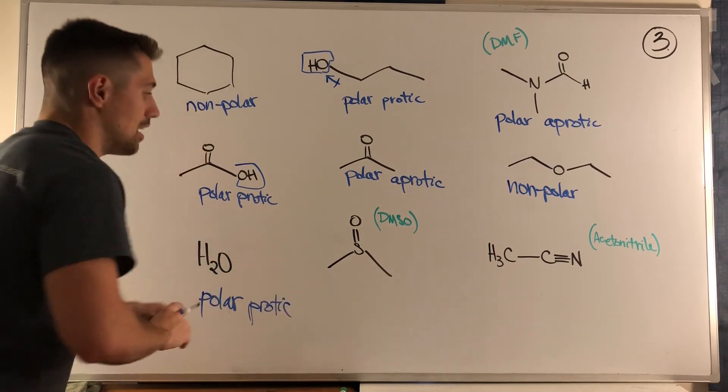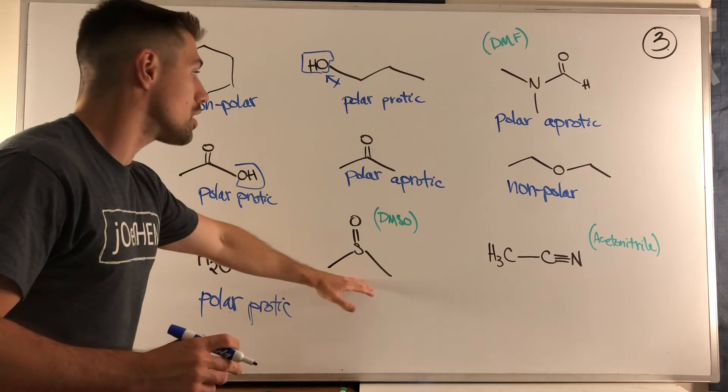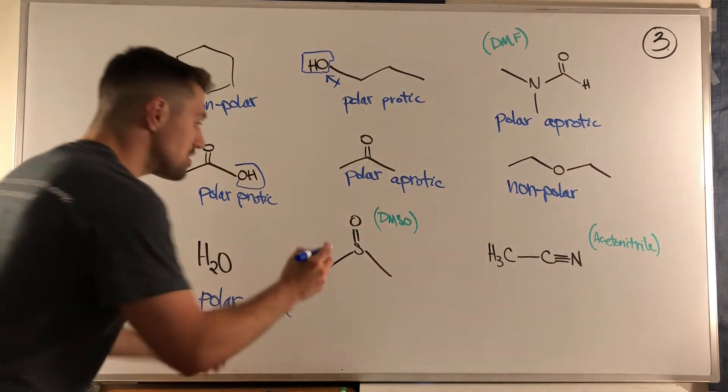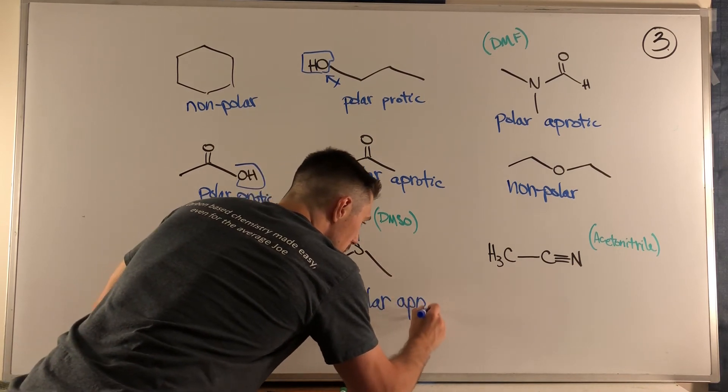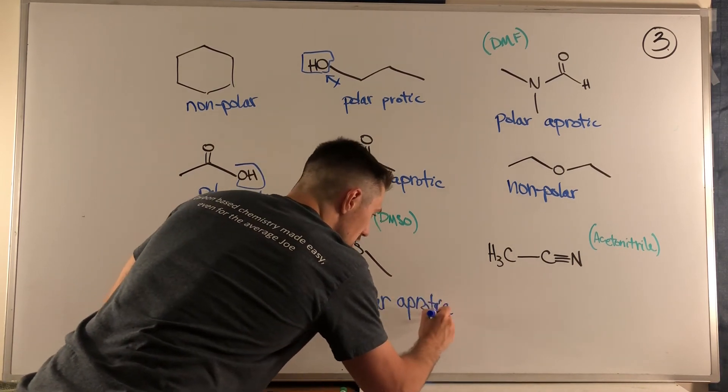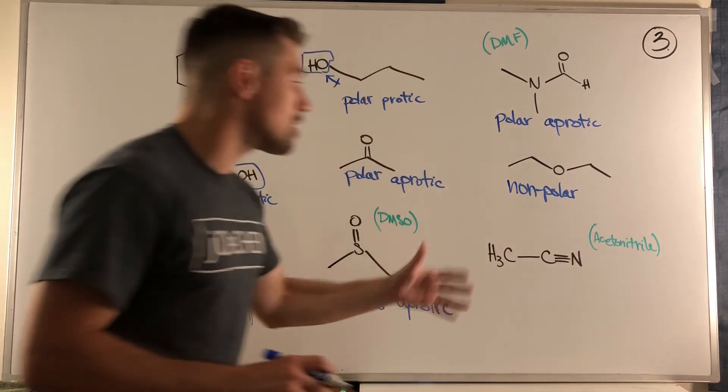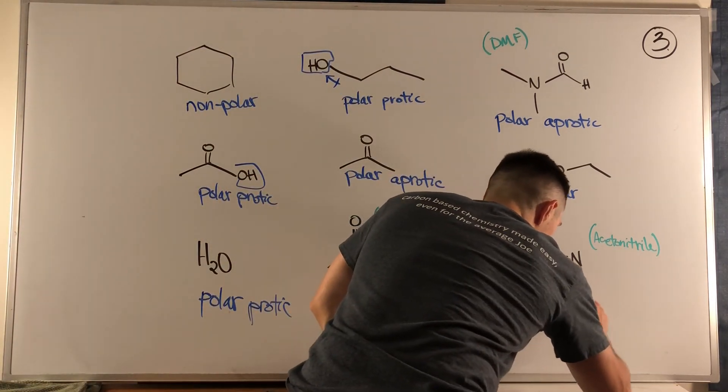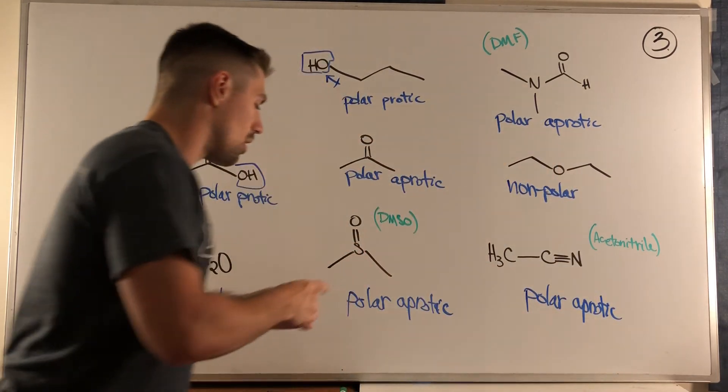Over here, dimethyl sulfoxide or DMSO looks just like acetone but with a sulfur right here. This is definitely polar aprotic - definitely polar, but we see no direct electronegative atom bonded right to hydrogen. And over here for acetonitrile, same thing - polar aprotic.